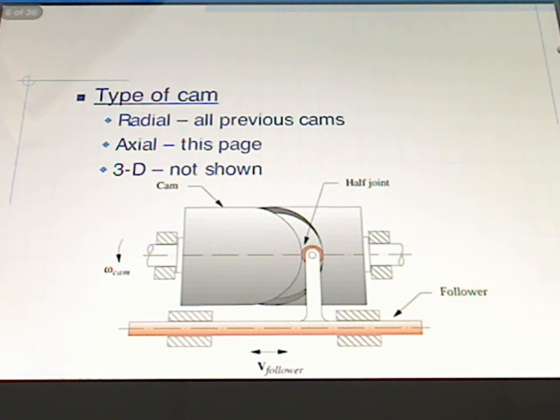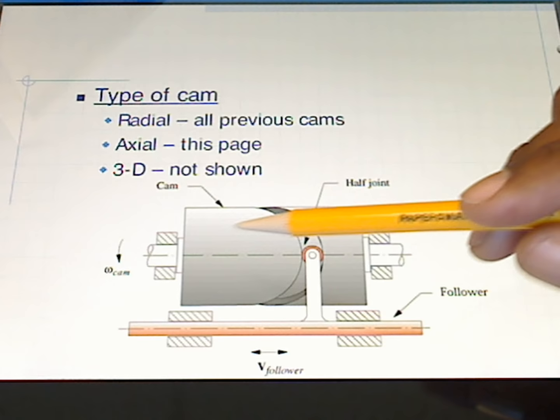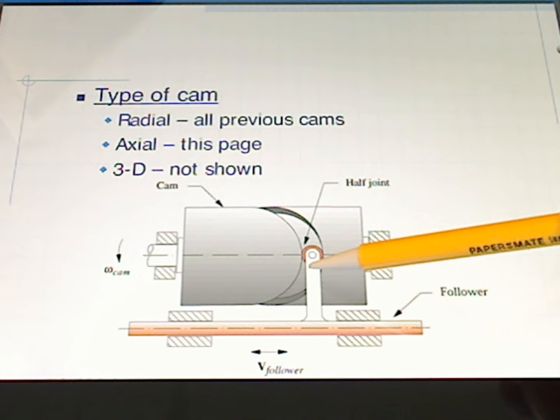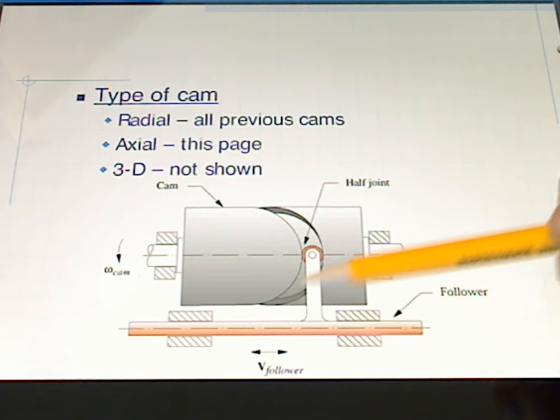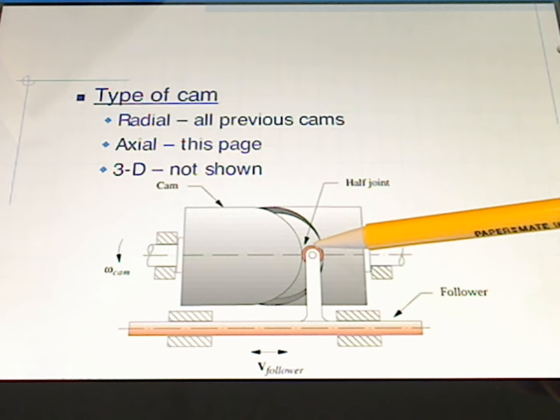Another way of classifying cams is by the type of cam. We have radial cams — those were the previous two examples with the translating follower and the rotating follower. We also have axial cams, and then there are 3D cams which are not shown in this presentation. For this axial cam, as the cylinder rotates there's a half joint where the follower has a wheel that rolls inside a groove, and as the cam rotates the follower moves back and forth as the wheel stays within this cam groove.